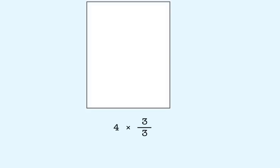Here's one last situation. What if we multiplied by a fraction that is equal to 1? Here, we show 4 multiplied by the fraction 3 thirds. 3 thirds, of course, is equal to 1 whole unit.